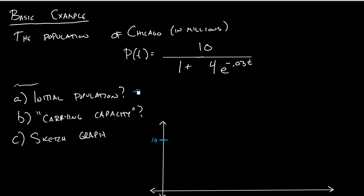So the initial population will be when T is equal to 0. We'll plug in 0 for T, and we'll get 10 over 1 plus 4 times E to the 0, which is 1. So this is 10 over 5, which is just equal to 2. So it starts at 2.